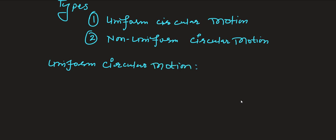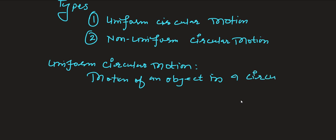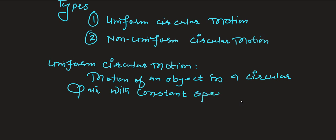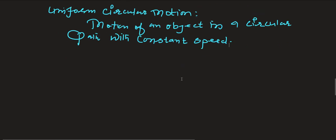Uniform circular motion is the motion of an object in a circular path with constant speed — remember. This is the main thing, dear children, you should understand. If an object is moving in a circular track with constant speed, then the motion of the object is called uniform circular motion — remember.